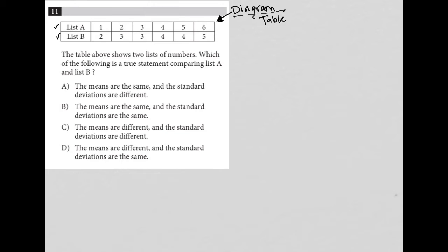A list of the numbers 1 through 6. Whereas list B starts at 2, ends at 5, but then we have these repeats of 4 and repeats of 3 here. So let's see what the question is asking. The table above shows two lists of numbers. Which of the following is a true statement comparing list A and list B?